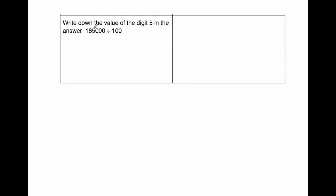So the five, which is in the thousands, will move to the tens. The eight, which is in the ten thousands, will move two places to the right, into the hundreds. And the one, which is in the hundreds of thousands, will move two places to the right, into the thousands. So the answer would be 1850. And the question says, write down the value of the digit five. So this is the digit five, it's in the fifties column, so the value of that digit is 50.